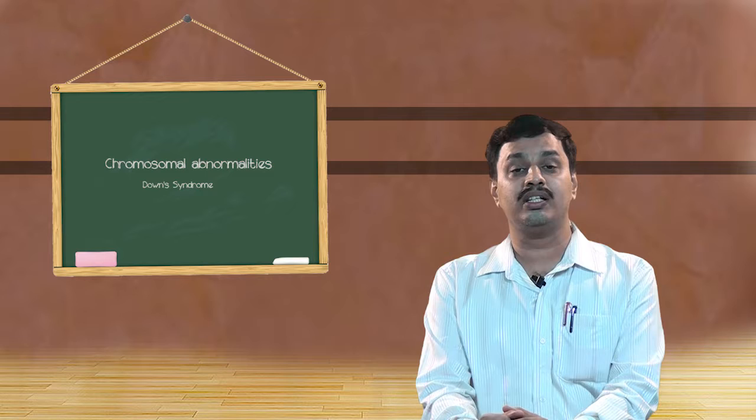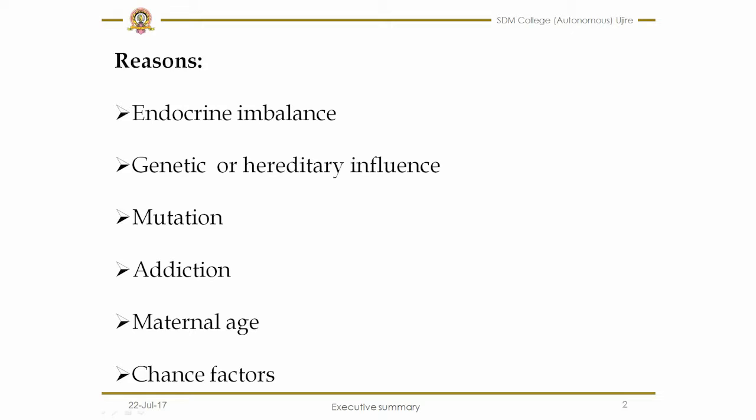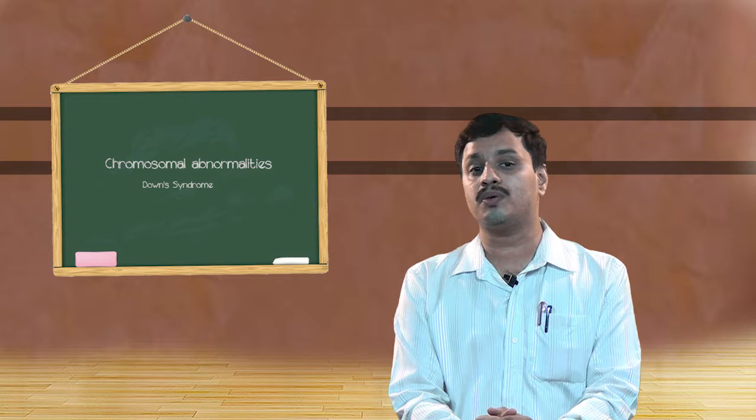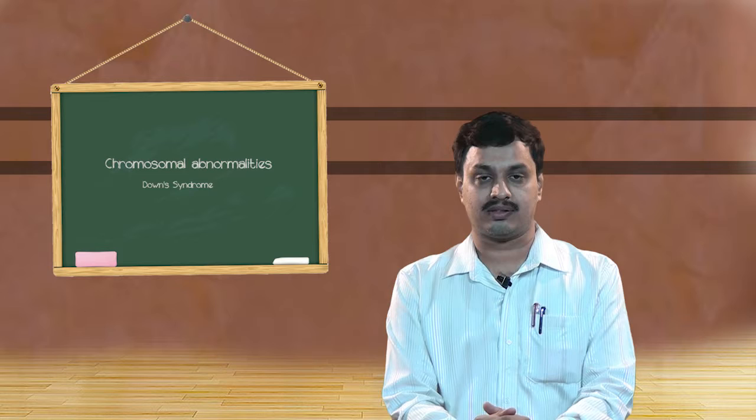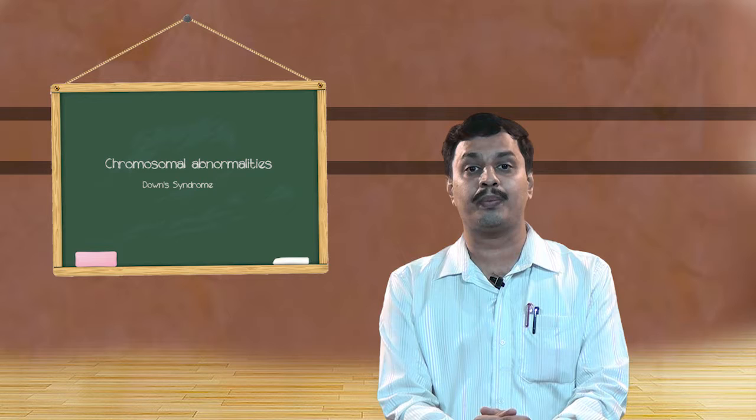Another one is maternal age. If the mother is aged more than 35 years and she conceives, then there are more chances of chromosomal abnormalities. Next is chance factors — some chance factors also act for the development of chromosomal abnormality in children. For example, the improper pairing of chromosomes during the time of meiosis may be a chance factor for developing chromosomal abnormality among children.